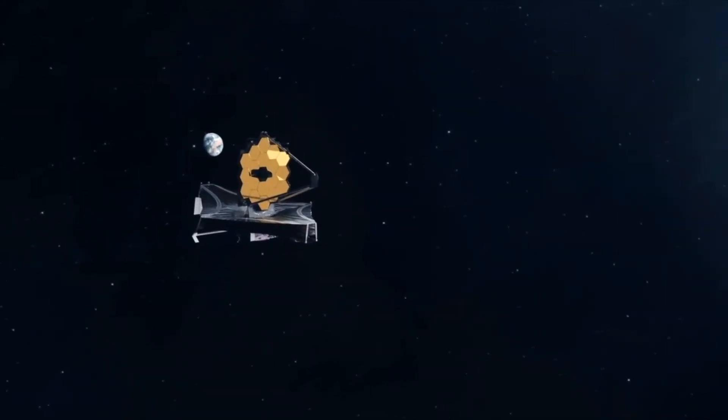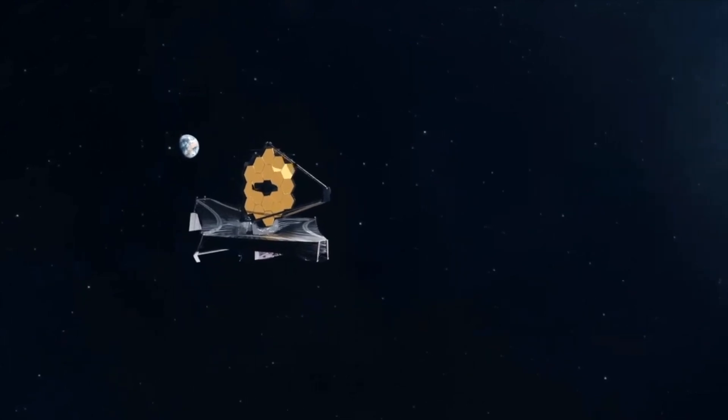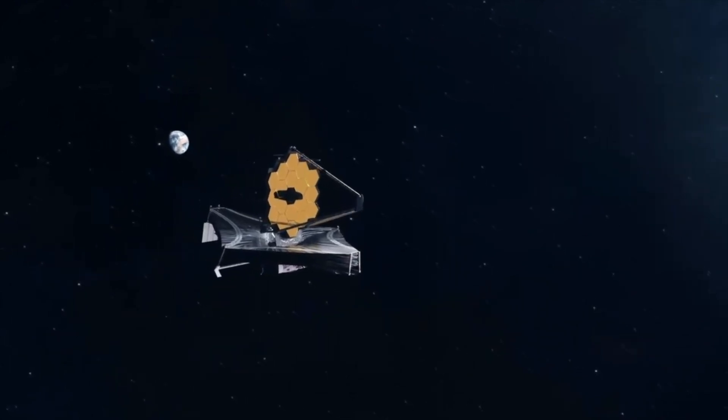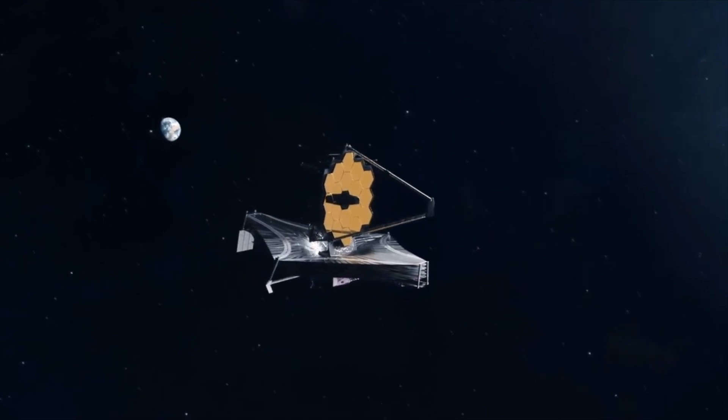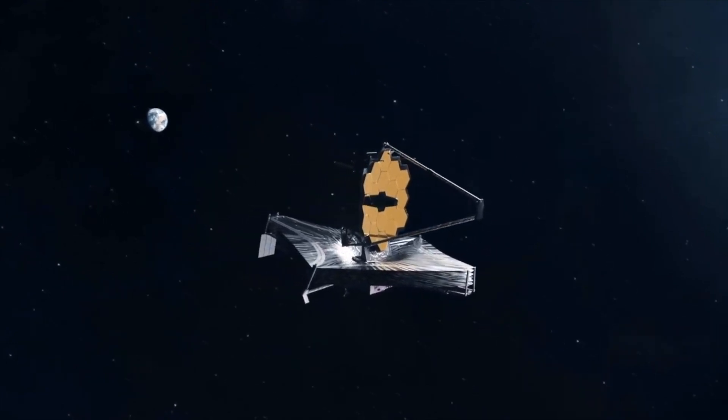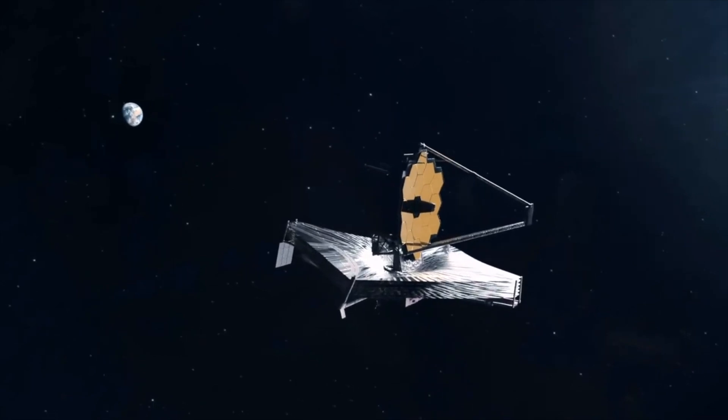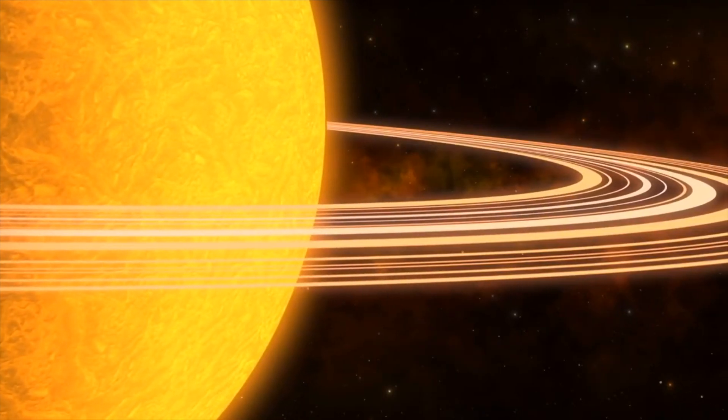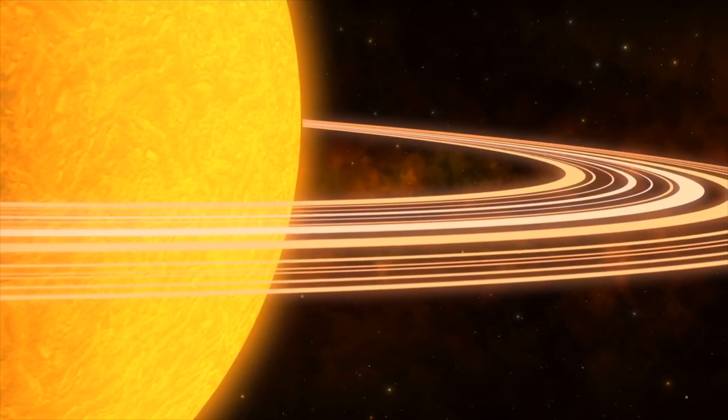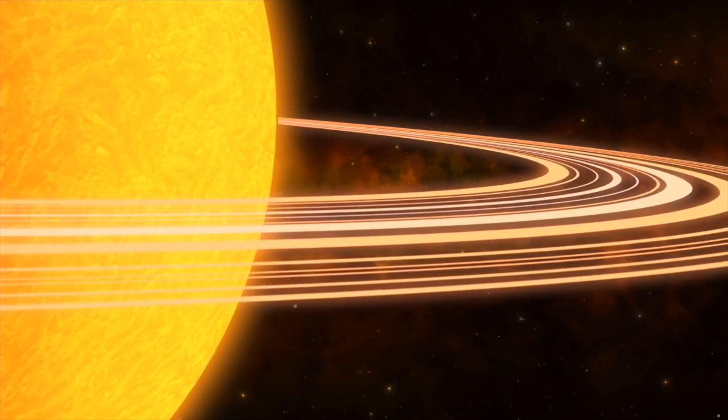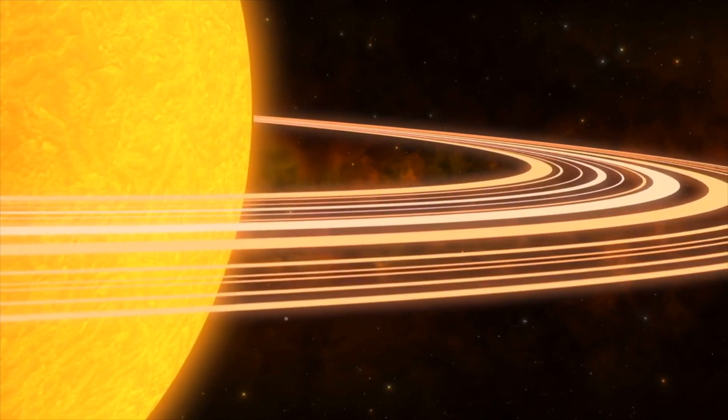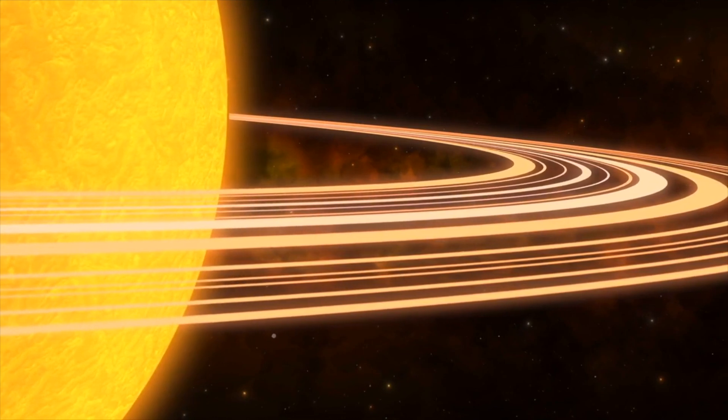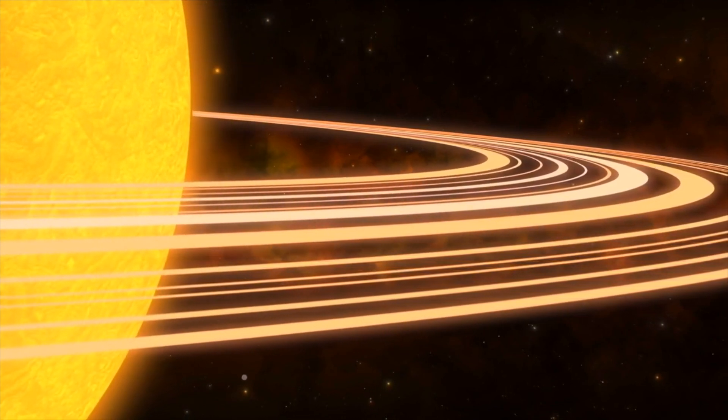The telescope's remarkable efficiency extended to our solar system as well. The JWST captured unprecedented images of Neptune's rings and moons, providing scientists with a wealth of information that had been elusive for over three decades. The telescope unveiled the faint, dusty bands of Neptune's icy rings, including new, previously undiscovered rings. This new information expanded our understanding of Neptune's ring system.